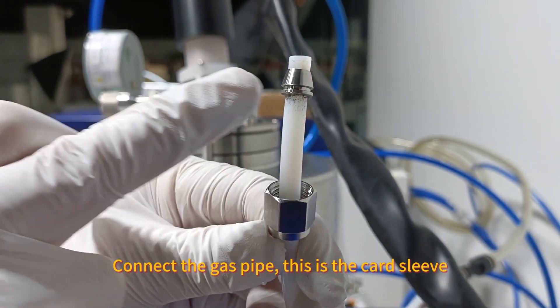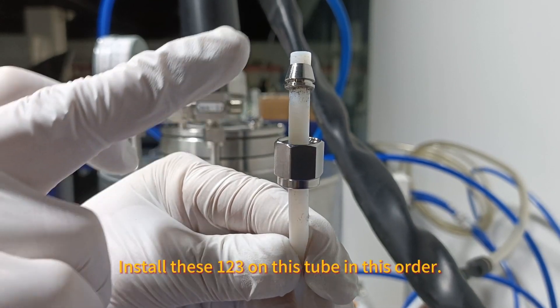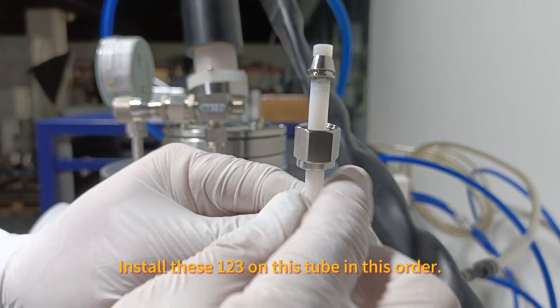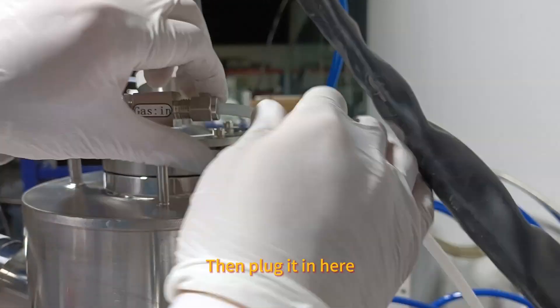This is the car sleeve. Note that the car sets are in this order. Install this ear surround this tube in this order. This place is exposed a little. Then plug it in here.